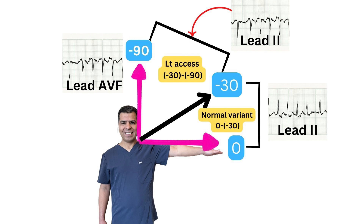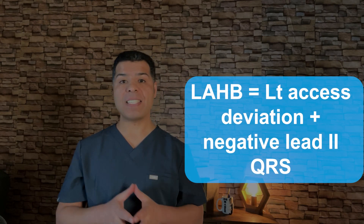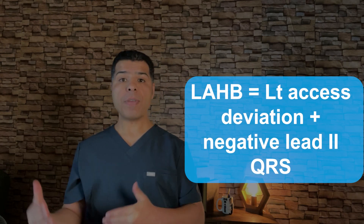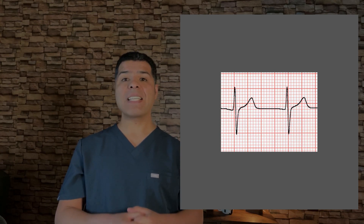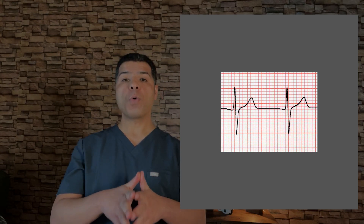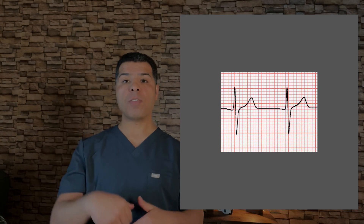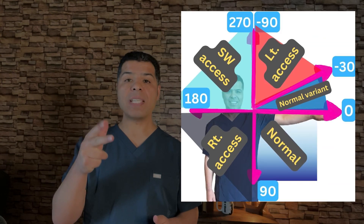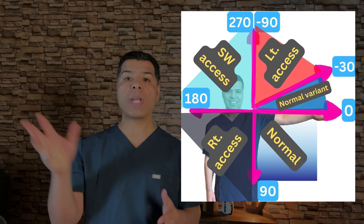When there is a negative QRS in lead 2 and a left axis deviation, we also call this a left anterior hemifascicular block. If in both leads the QRS was equivocal, we call the axis indeterminate — this is the fifth scenario where we cannot tell if the QRS is positive or negative in lead AVF or lead 1. So to summarize, the axis can be normal, normal variant, left, right, southwest, or indeterminate — five scenarios.